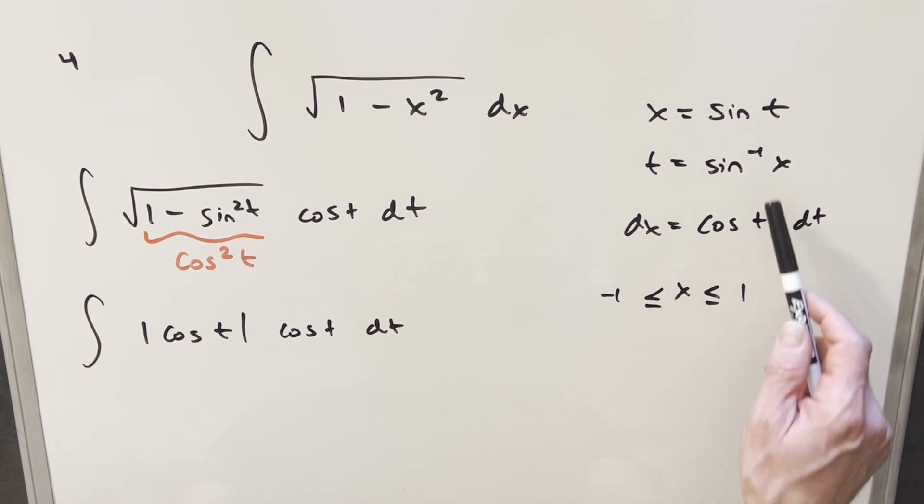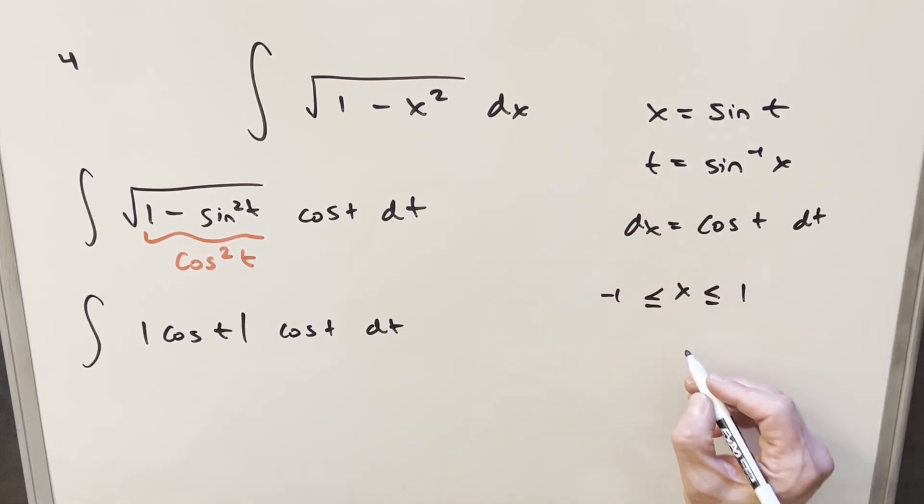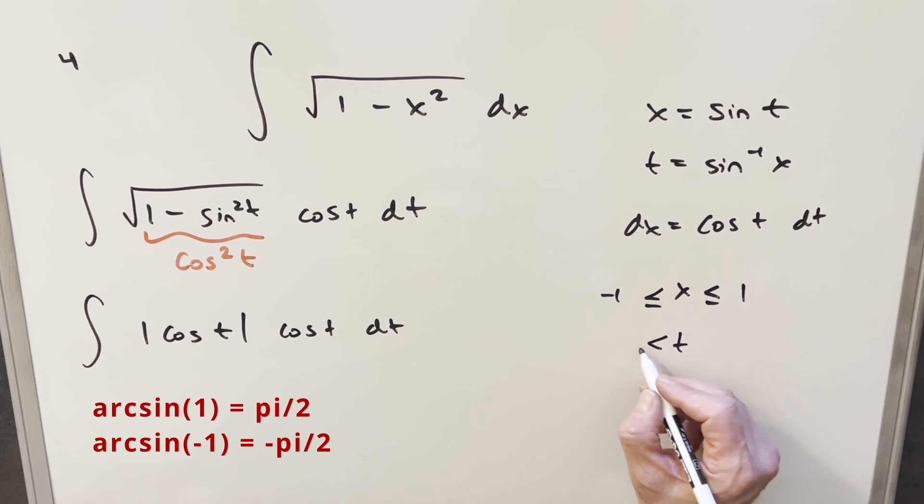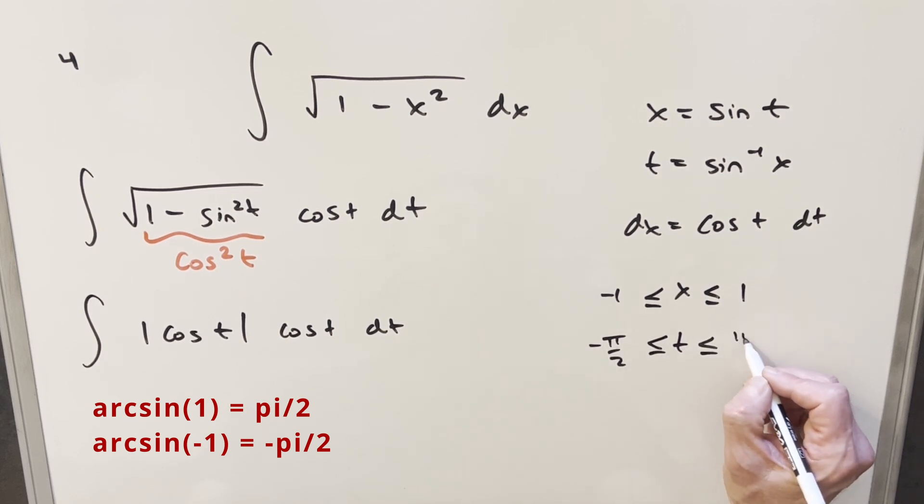But then this is also the domain for arc sine of x, and this gives us back our range for t. So we can see from this that our t is going to be between minus pi over 2 and pi over 2.